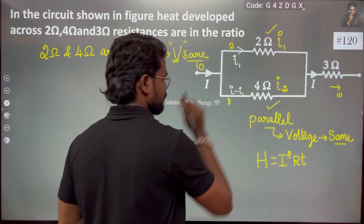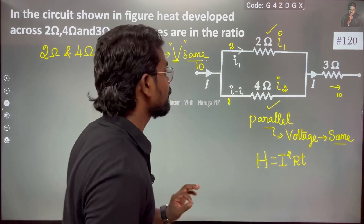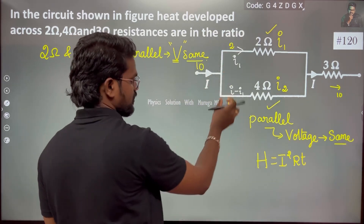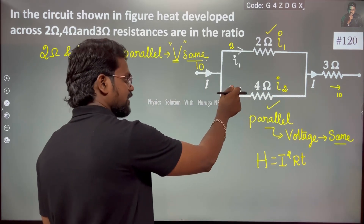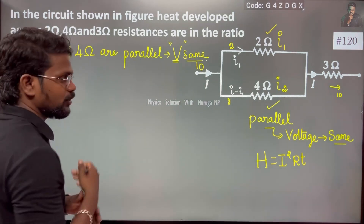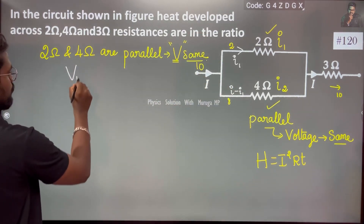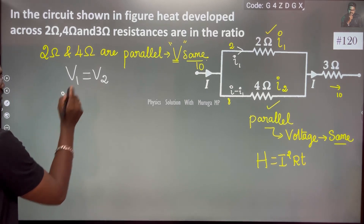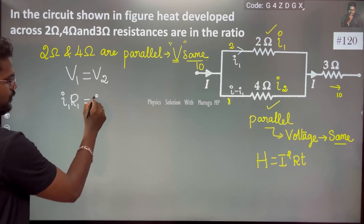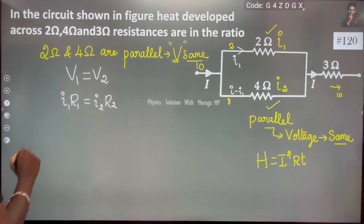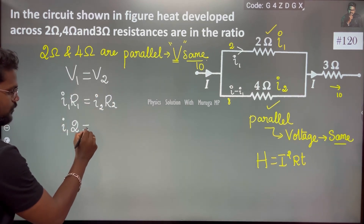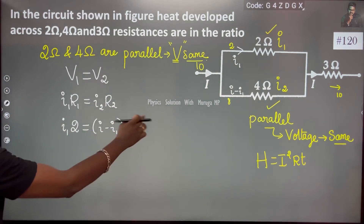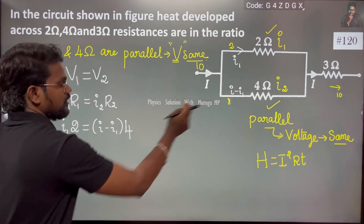I2 can also be represented as I minus I1. Since they are connected in parallel, the voltage is the same: V1 equals V2. Using Ohm's law, voltage equals IR, so I1·R1 equals I2·R2. Therefore, I1 into 2 ohm equals I2 into 4 ohm, where I2 is (I minus I1) and R2 is 4 ohm.